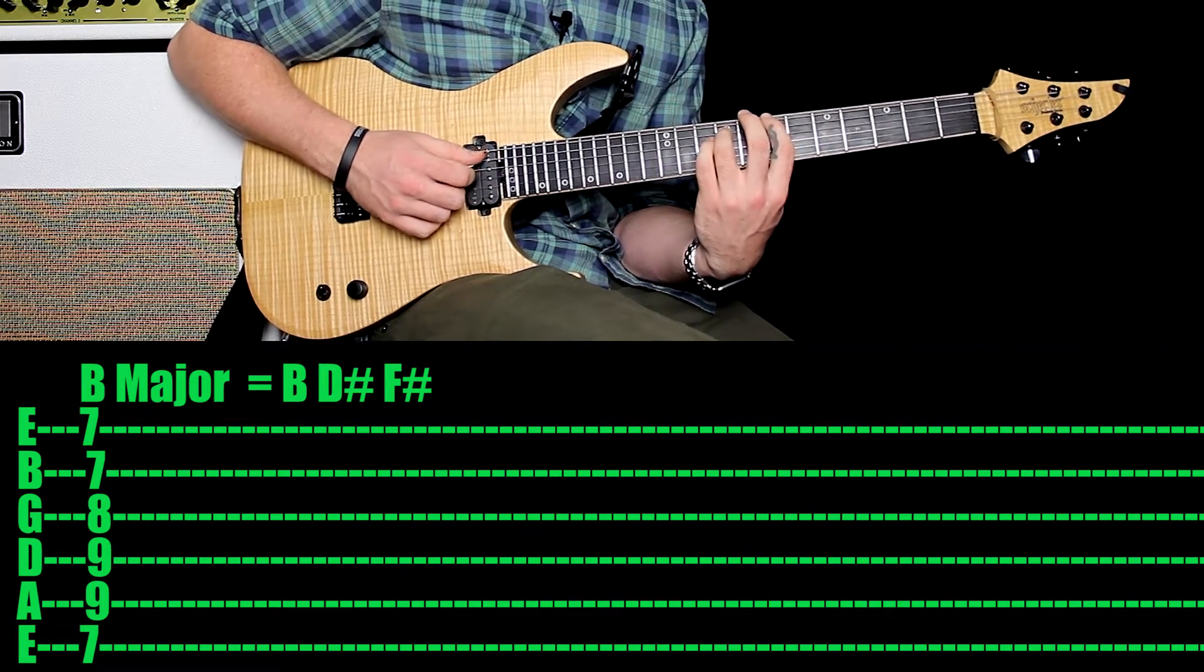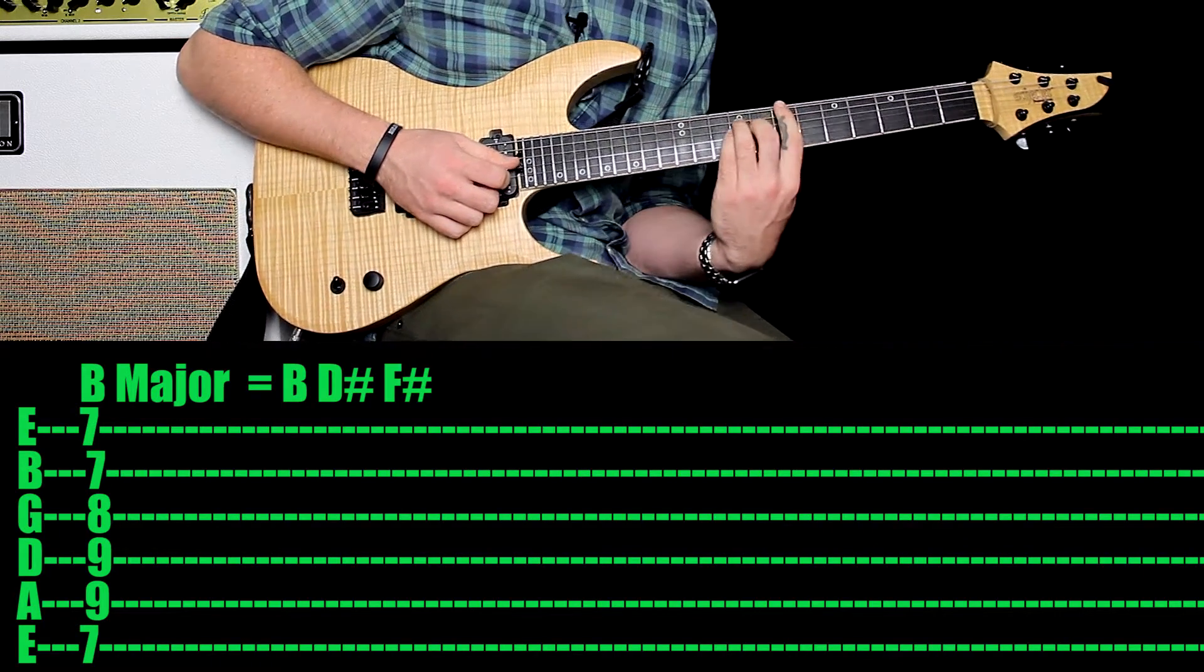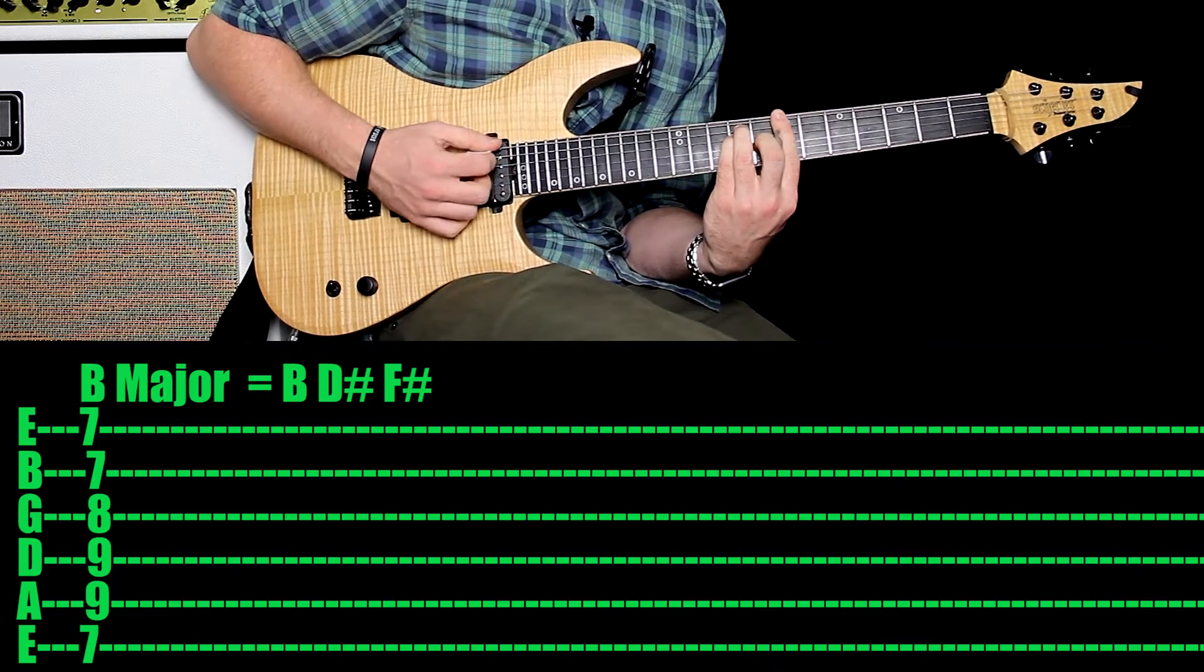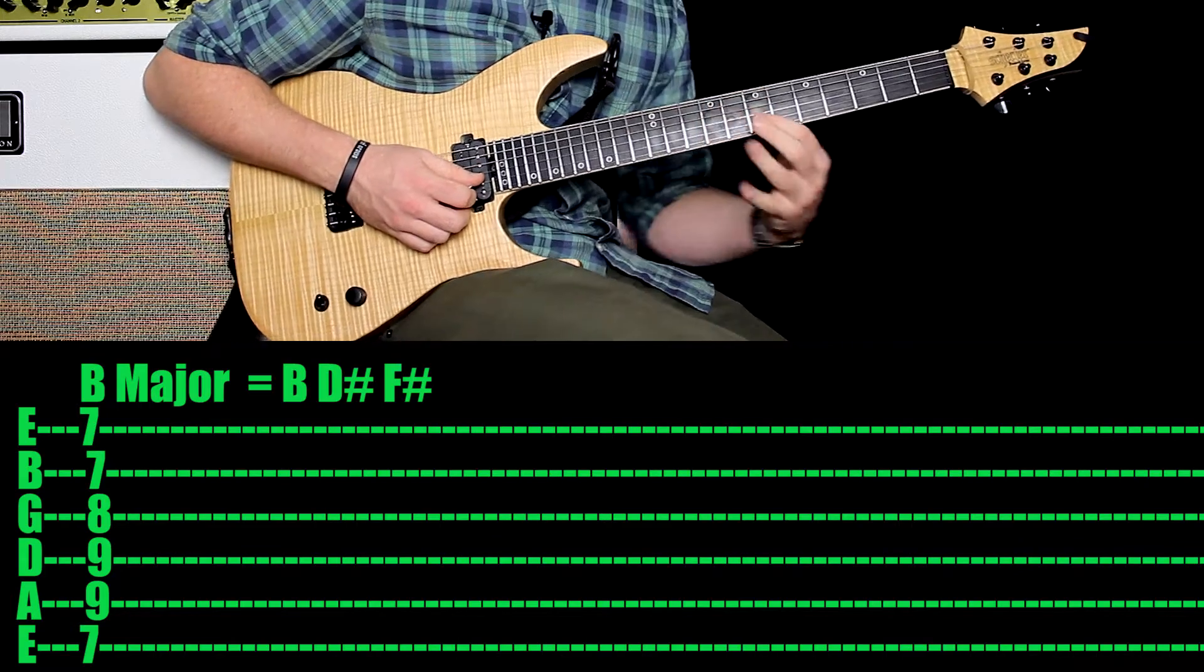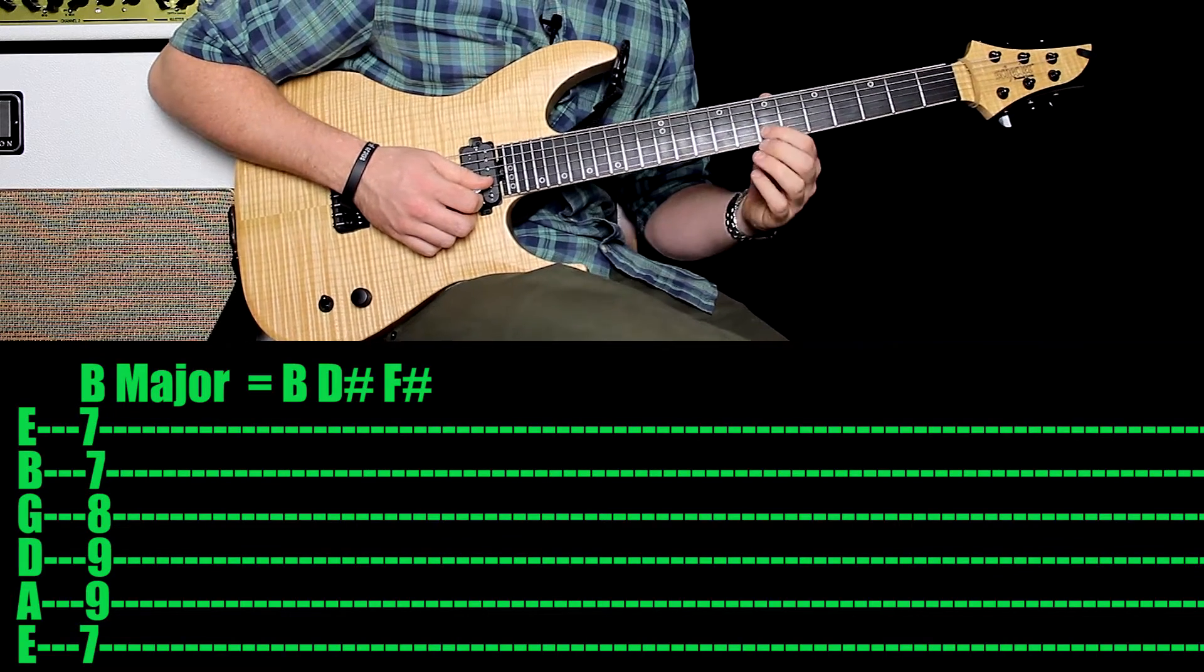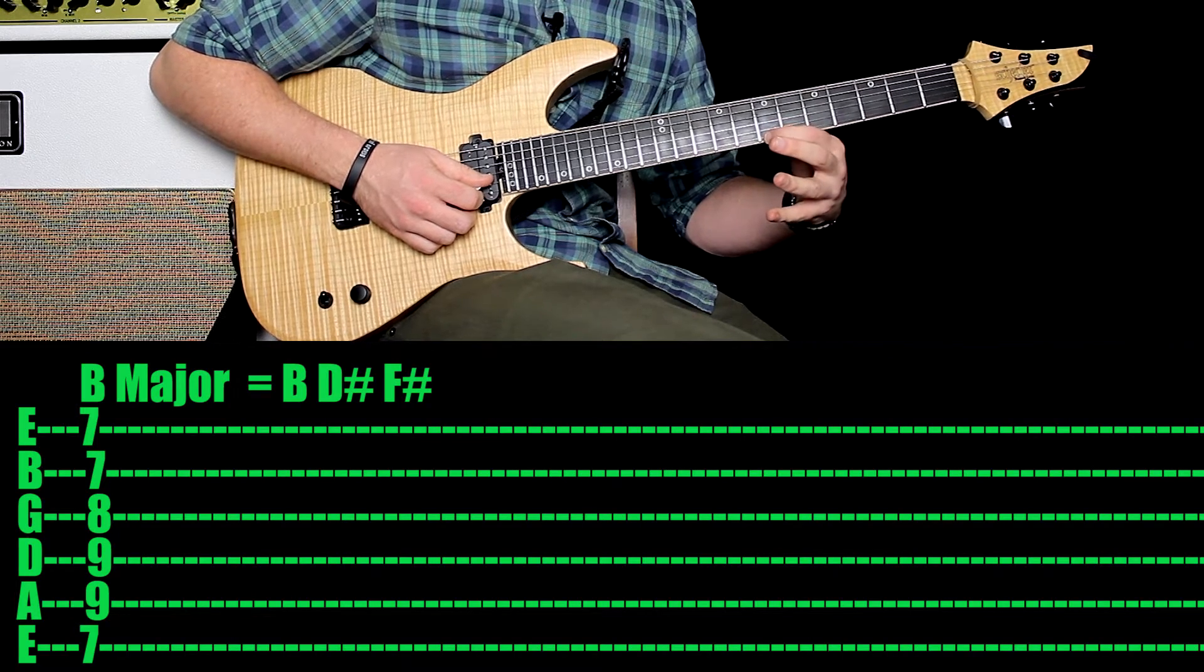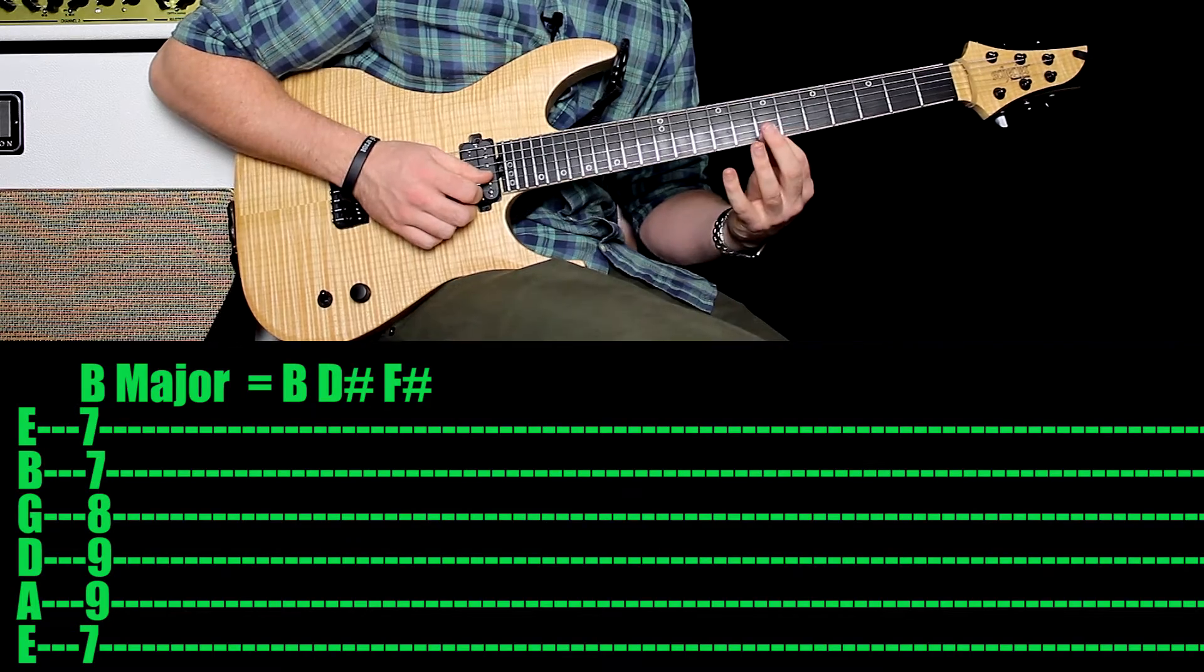So we've got first note, fifth degree, and then your octave. Then you want your second finger there on the third string of the eighth fret. That's giving it that major happy sound. And finally, you want your first finger also holding down there on the seventh fret of the second string and the seventh fret of the first string. That's giving you an F sharp and your B note.